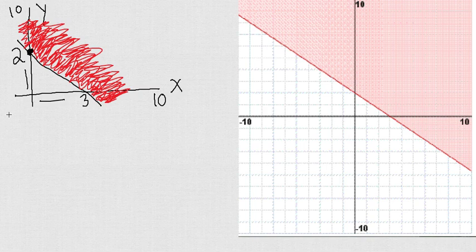Here I have the y intercept, which is going to be 0,2. And here I have the x intercept, and that happens when y is equal to 0, and that is 3,0.